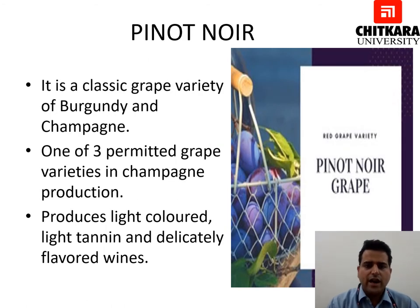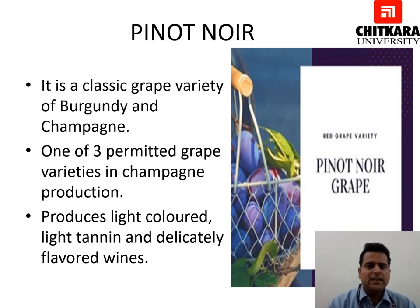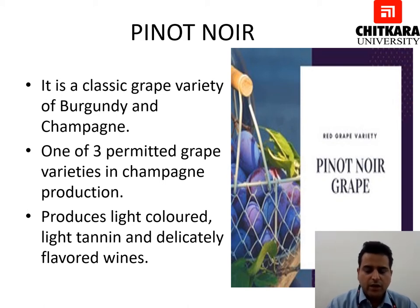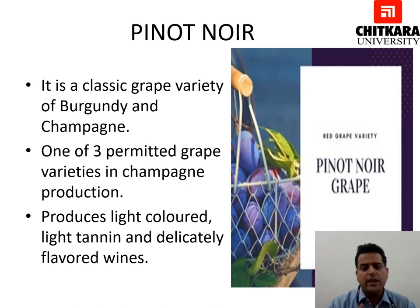The second red wine grape variety is Pinot Noir, a classic grape variety of Burgundy and Champagne. It is one of the three permitted grape varieties in Champagne production, along with Pinot Meunier and Chardonnay. Pinot Noir produces light-coloured, light-tannin, and delicately flavored wines.